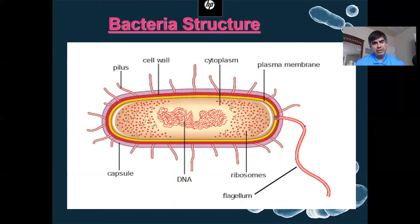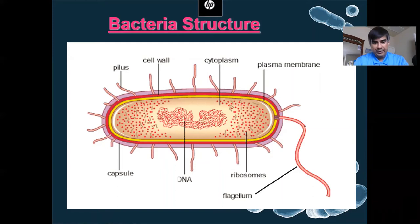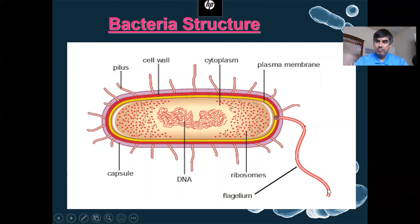Now we're switching — that was all about viruses. Let's talk about bacteria. Bacteria are prokaryotic cells — no nucleus. A basic bacteria cell has DNA, usually just one circular piece, and ribosomes — that's pretty much it. No other organelles: no mitochondria, no ER or Golgi. You see cytoplasm, a plasma membrane, a cell wall, and some bacteria have an extra outer covering called a capsule. They tend to have a flagellum — a long whip-like structure that helps them move.